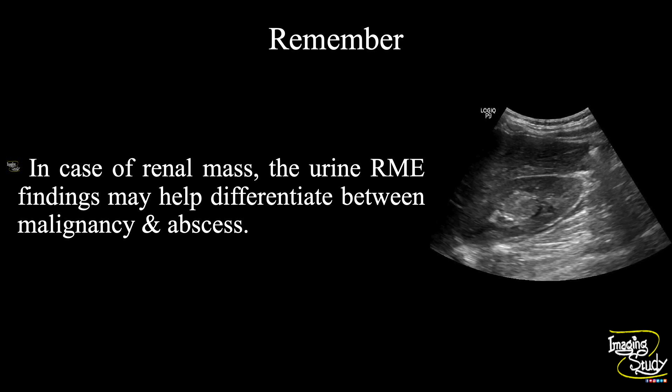Another take-home message: in cases of renal mass, urine R/M/E findings may help differentiate between malignancy and abscess. You will get hematuria with malignancy, whereas an abscess will show plenty of pus cells. So before doing any other radiological procedures, please try to correlate with urine R/M/E findings.